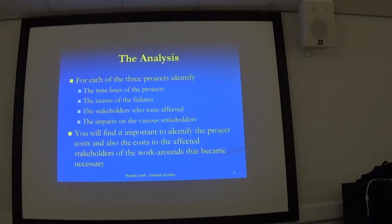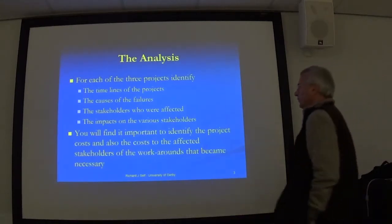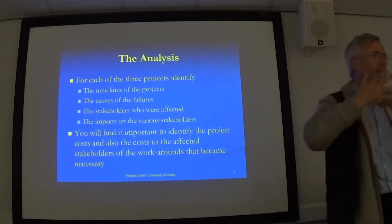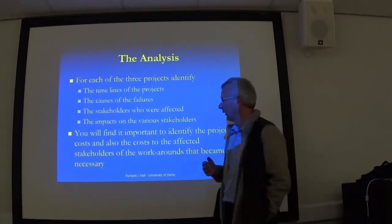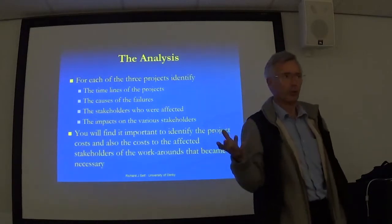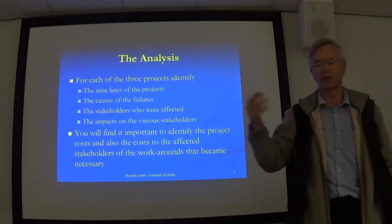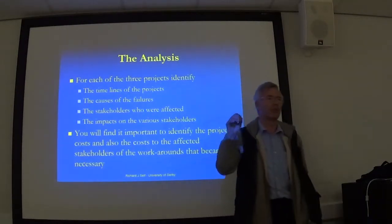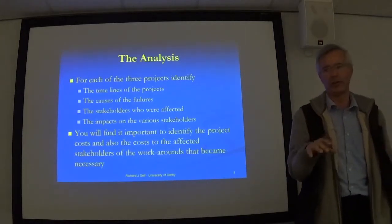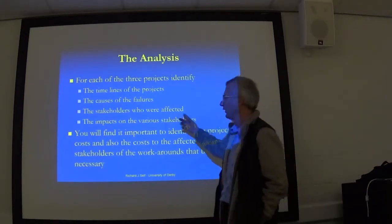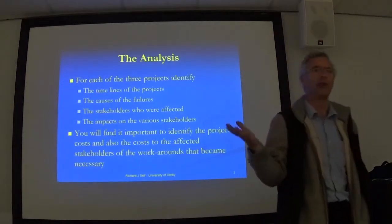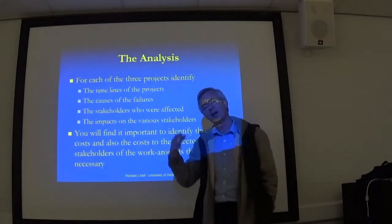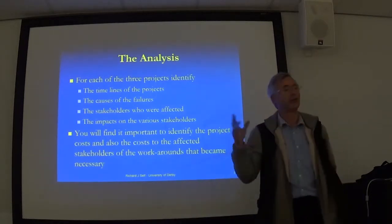For your analysis, there are four critical things to investigate for each of the three projects: first, the timeline — how long did it take and where were critical decisions made; second, when they discovered there was a problem, what they did about it, and whether it worked; third, who all the stakeholders are — the people involved in and affected by each project; and fourth, you might want to Google 'define stakeholder' to find useful definitions, then identify the affected stakeholders for each of the three projects.